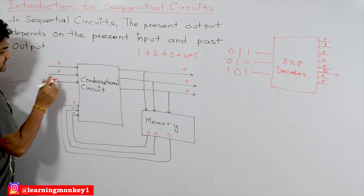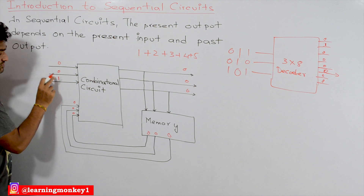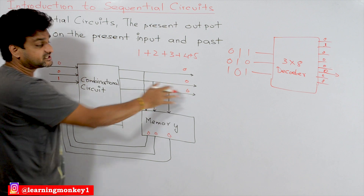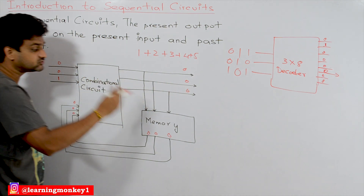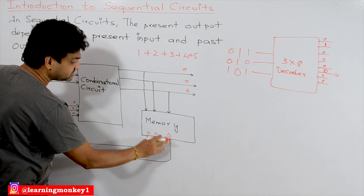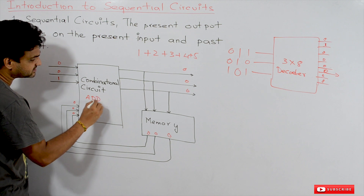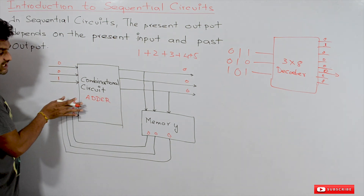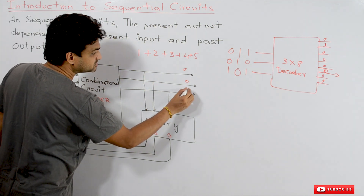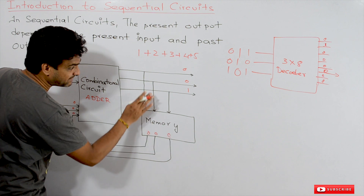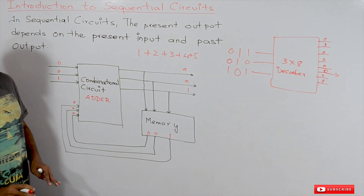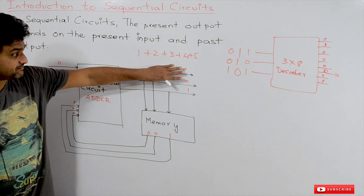Now I want to add 1 to this circuit. The present input is 0-0-1. To get the present output, the circuit takes the values from the past output, which is 0-0-0. This is a 3-input adder combinational circuit, so 0-0-0 added to 0-0-1 produces 0-0-1. This result gets stored in memory as the new past output.